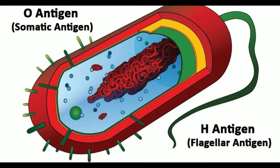Character comparison — O antigen vs H antigen. Point 1: O antigen is referred to as somatic antigen or Boivin antigen; H antigen is referred to as flagellar antigen. Point 2: O antigen determination is based on oligosaccharides associated with lipopolysaccharides; H antigen is based on flagellar proteins. Point 3: O antigen is part of the cell wall lipopolysaccharide (LPS); H antigen is not a part of the cell wall.